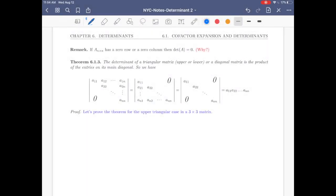Hello, welcome back. So let's continue. Let's start with a remark. If A has a zero row or a zero column, then the determinant of A is zero.